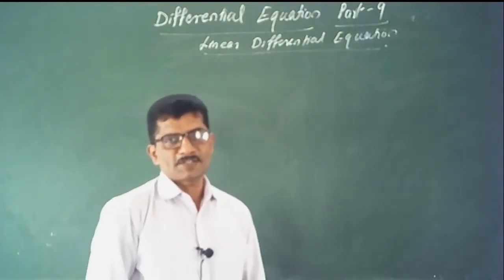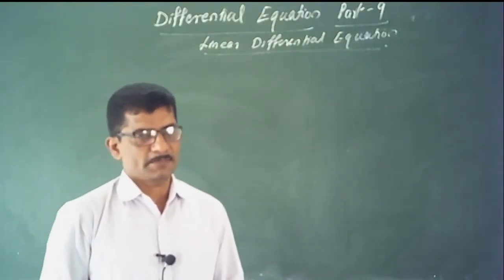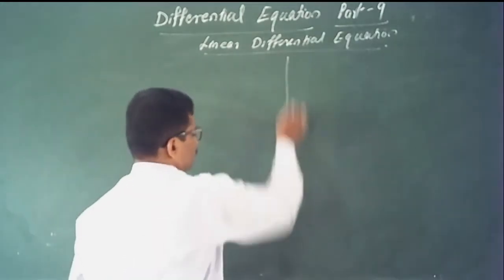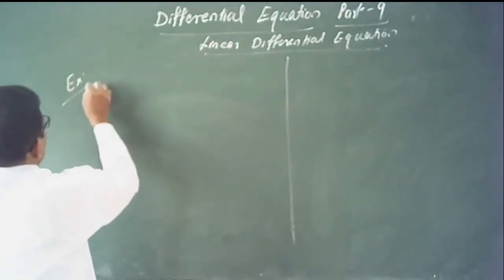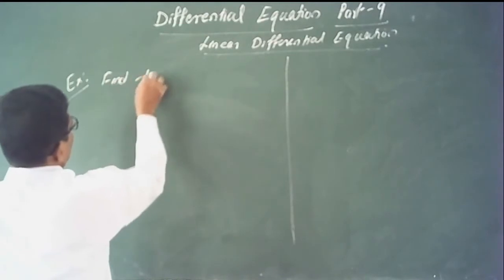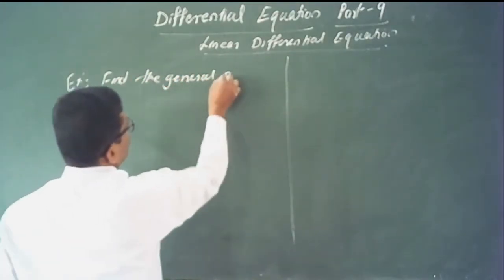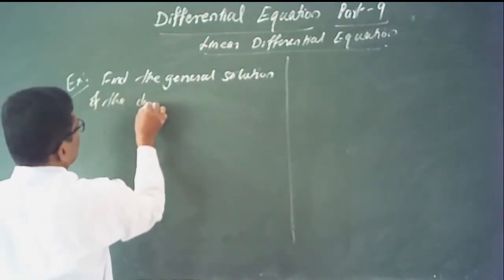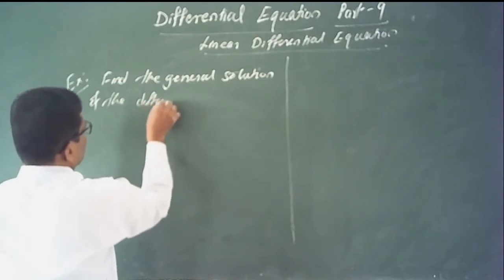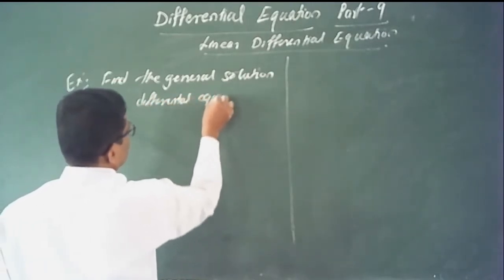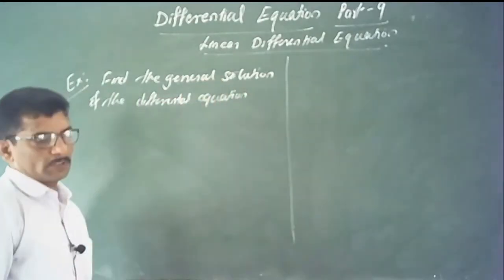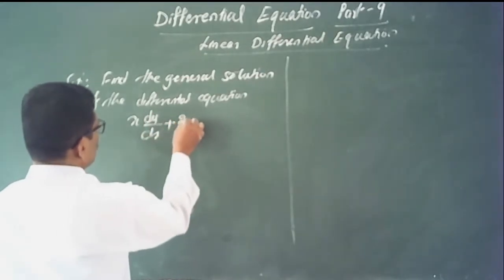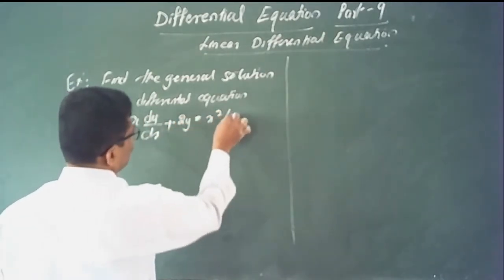Hi students. This is Differential Equations Part 9, the last part. We are solving some problems using linear differential equations. Find the general solution of the differential equation: x times dy/dx plus 2 times y is equal to x squared times log x.